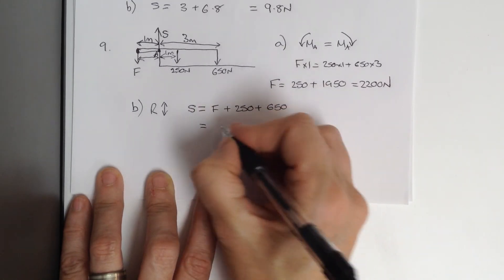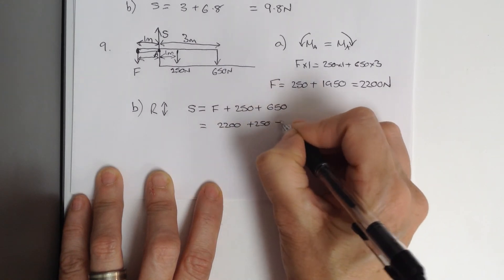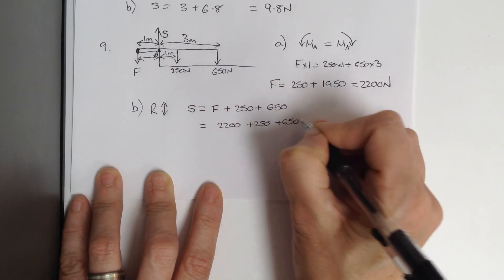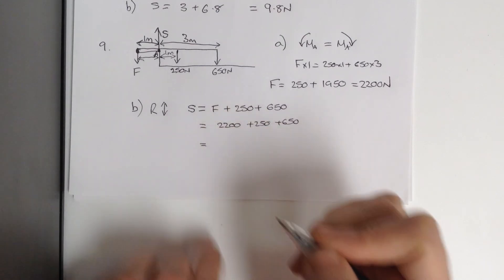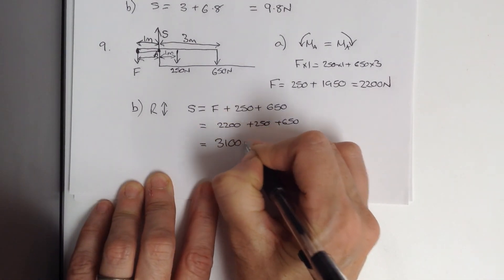So that's equal to 2200 plus 250 plus 650, which is equal to 3100 newtons.